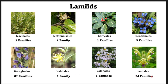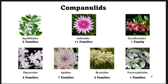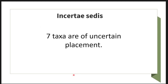The last subclade of superasterids is campanulids, with seven orders: Aquifoliales with five families, Asterales with eleven families, Escalloniales with one family, and Dipsacales with one family. There are also certain ungrouped taxa in the APG4 system called incertae sedis, meaning placement unknown or uncertain placement, and seven such taxa are recognized in the APG4 system of classification.